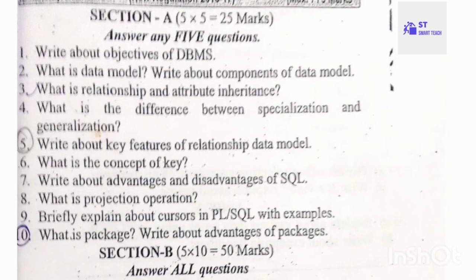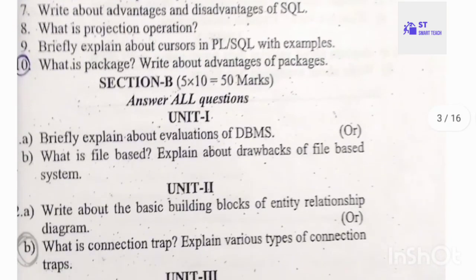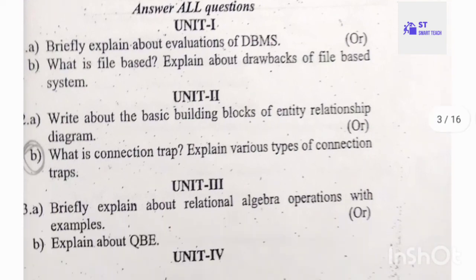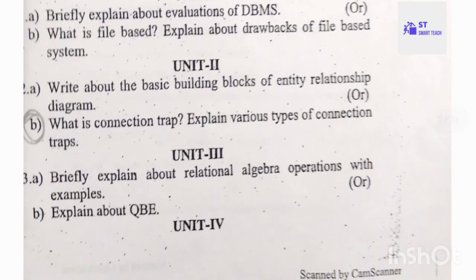Continuing 2017 Part A: briefly explain about cursors in PL/SQL with examples; what is a package — write about advantages of packages. Part B: 11A — briefly explain about the evolution of DBMS; what is a file-based system and explain its drawbacks. Twelfth: write about the basic building blocks of entity relationship diagram; what is a connection trap — explain various types of connection traps. Thirteenth: briefly explain about relational algebra operations with examples; explain about QBE.